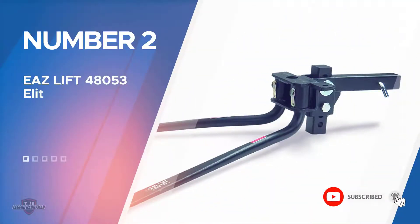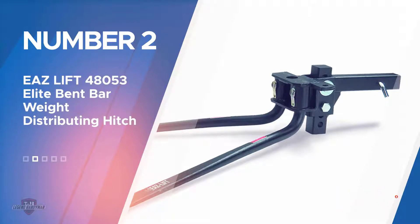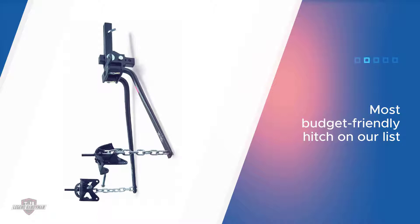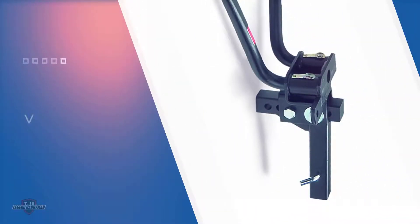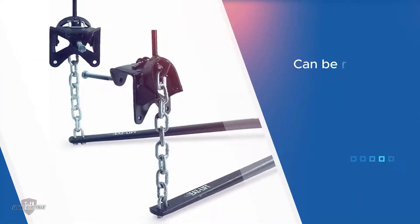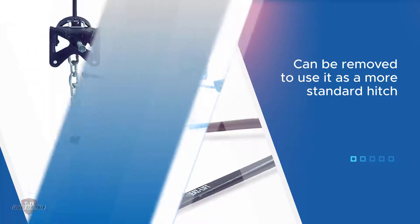Number two: EAZ lift 48,053 elite bent bar weight distributing hitch. The EAZ lift 48,053 weight distribution hitch is the most budget friendly round bar hitch we could find on the market today. The good news is that you won't have to severely sacrifice quality to get a hitch that fits your budget. EAZ lift is actually made by Camco, which is one of the more reliable brands in the industry. It comes with an adjustable ball mount but does not include the hitch ball itself, so you'll have to grab this accessory separately.